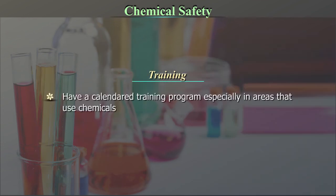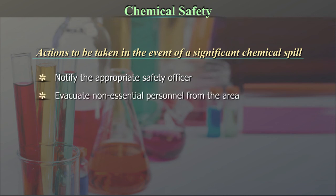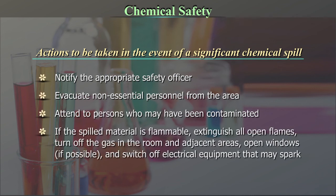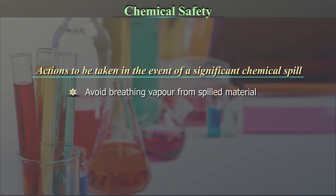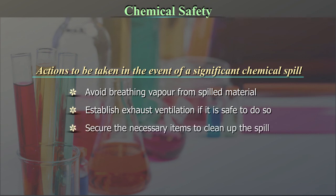Training: have a calendared training program especially in areas that use chemicals, and have evaluation of that training. Actions to be taken in the event of a significant chemical spill: notify the appropriate safety officer; evacuate non-essential personnel from the area; attend to persons who may have been contaminated. If the spilled material is flammable, extinguish all open flames, turn off the gas in the room and adjacent areas, open windows if possible, and switch off electrical equipment that may spark. Avoid breathing vapour from spilled material. Establish exhaust ventilation if it is safe to do so. Secure the necessary items to clean up the spill.